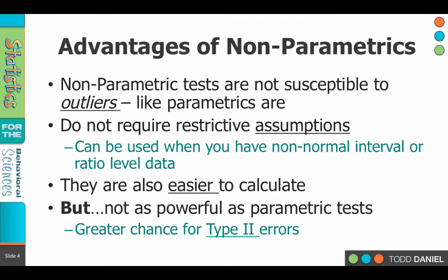It also turns out that in many cases they're actually easier to calculate. Chi-square is something you can do by hand almost as easily as you can do in SPSS. But the trade-off is that when we use non-parametric tests, they are not as powerful as parametric tests. It's harder to find effects that exist, so there's a greater chance for Type 2 errors using non-parametric statistics.